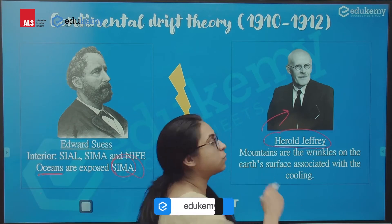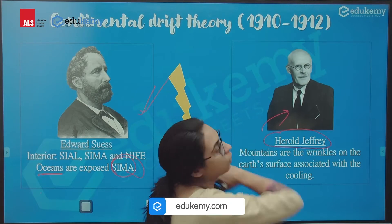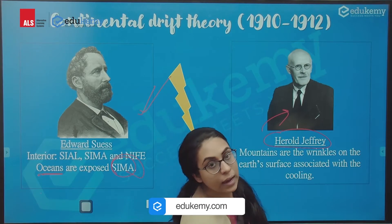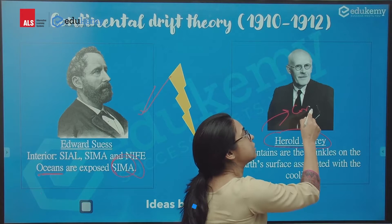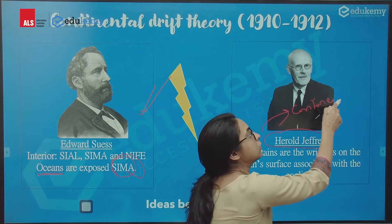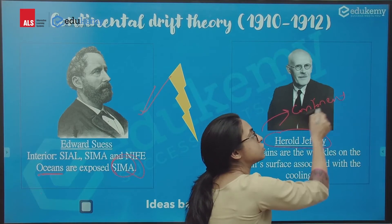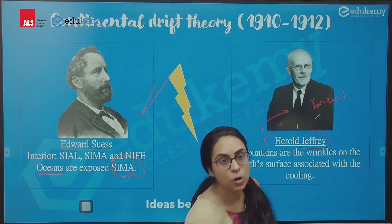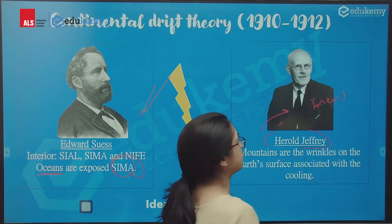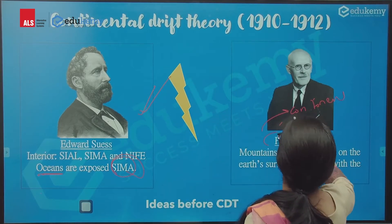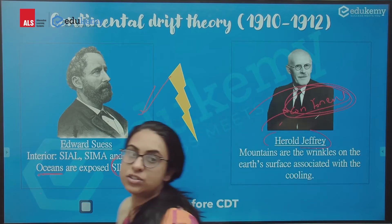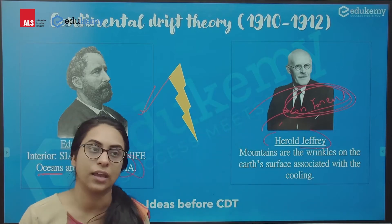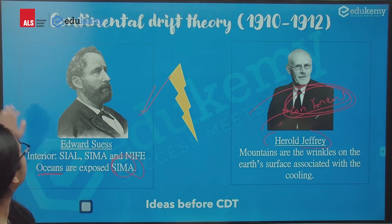And Jeffrey was saying that the continents are permanent — their size and shape are permanent things. This is called the permanency of the earth. That is what Jeffrey was saying.